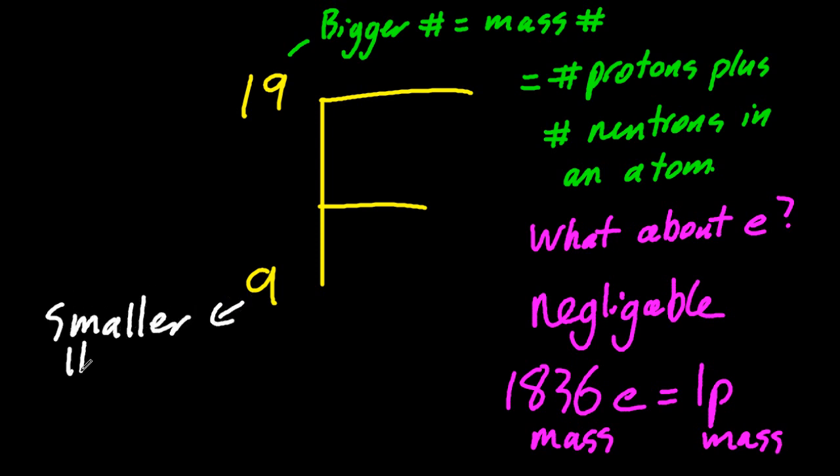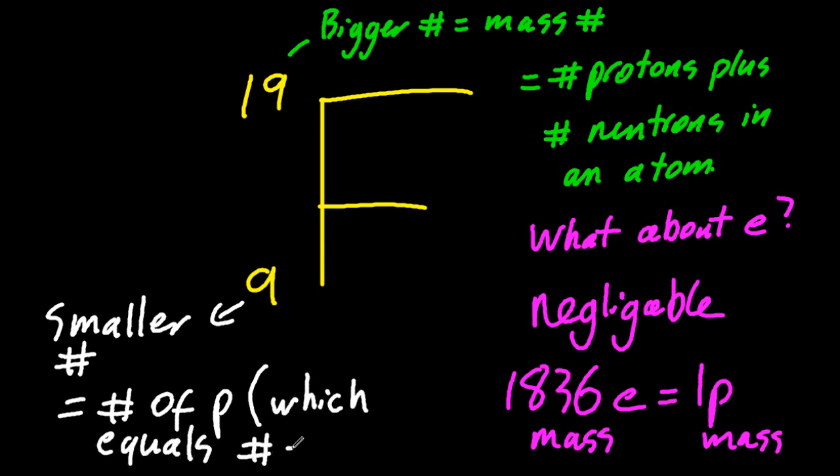The smaller number, well, that's always the atomic number. And the atomic number definition is the number of protons in an atom. You can say number of protons which equals the number of electrons in an atom. That's also acceptable.